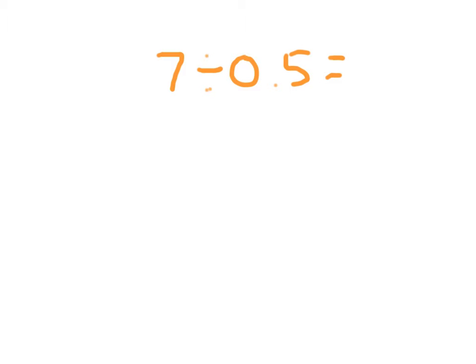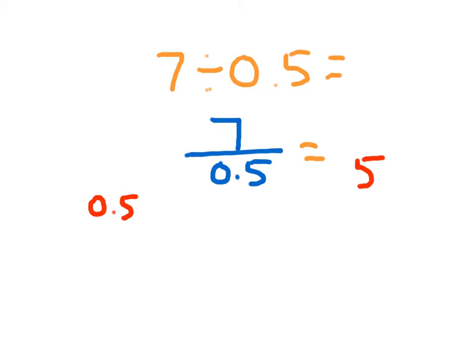This can be rewritten as a fraction: 7 divided by 0.5. Now our divisor here, 0.5 — it would be much easier if this was just 5 as opposed to 0.5. So if I write an equivalent fraction, how do I get from 0.5 to 5? I would have to multiply by 10.